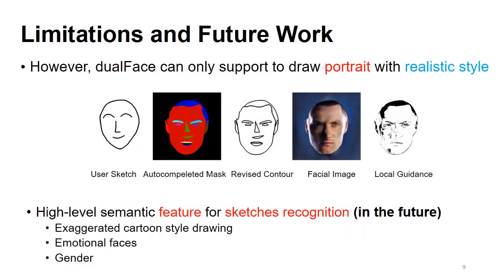As a limitation, because Dual Face converts the user's sketch to a mask by matching strokes with an example mask, the contour-sketch mask contains extracted shape information based on real photos. This means Dual Face can only support portraits in realistic styles and it is difficult to handle high-level semantic sketches such as emotional faces, exaggerated cartoon-style drawings, or renders. Additionally, if the strokes for a facial part are not closed curvatures, this may lead to incomplete contours of facial parts and generate suboptimal results.